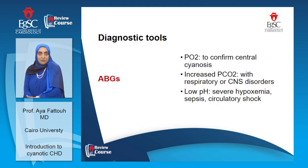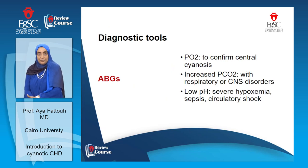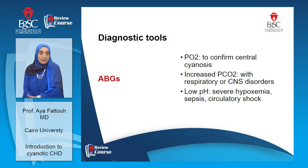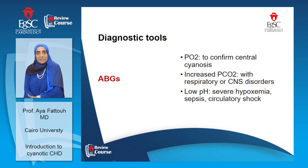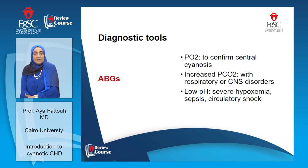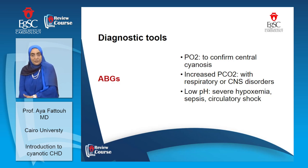You can also use the ABG — it will help you assess the CO2. If CO2 is increased, it is most probably a pulmonary or CNS cause. While in cases of severe hypoxemia, you will find acidosis with low pH. This might also happen with sepsis. It helps you measure the PO2 accurately.